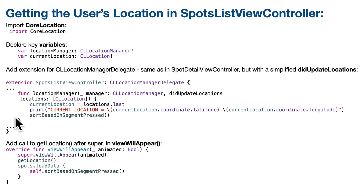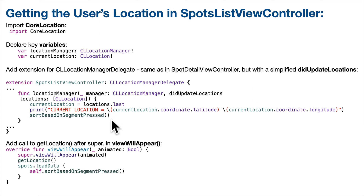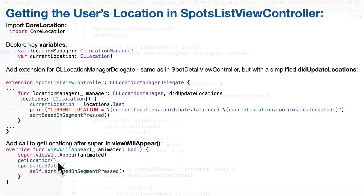Down here is our locationManager didUpdateLocations function — that's the main function we worked with in the earlier video when we got the user location in SpotDetailViewController. As you can see, we did cut out a lot of the functionality in this code since we're not working with maps and we're not reverse geocoding. We'll also need to update our viewWillAppear to include a call to getLocation. So let's code this up.